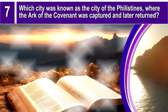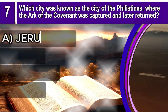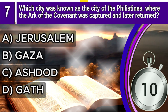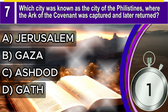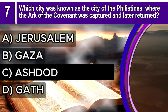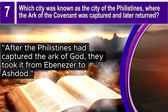Question 7. Which city was known as the city of the Philistines where the Ark of the Covenant was captured and later returned? A. Jerusalem, B. Gaza, C. Ashdod, D. Gath. The correct answer is C. Ashdod. 1 Samuel 5, verse 1 says: After the Philistines had captured the Ark of God, they took it from Ebenezer to Ashdod.